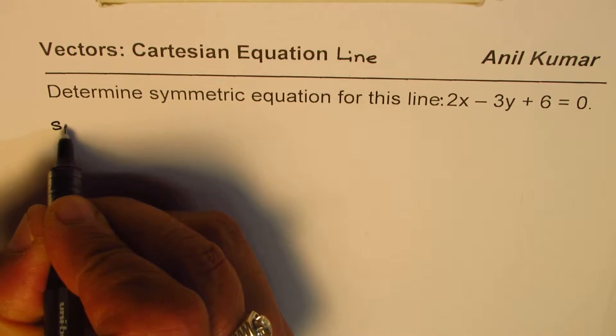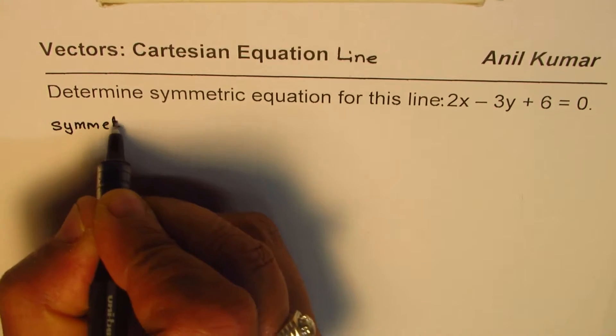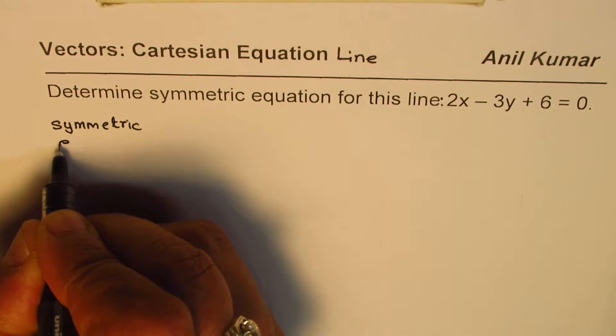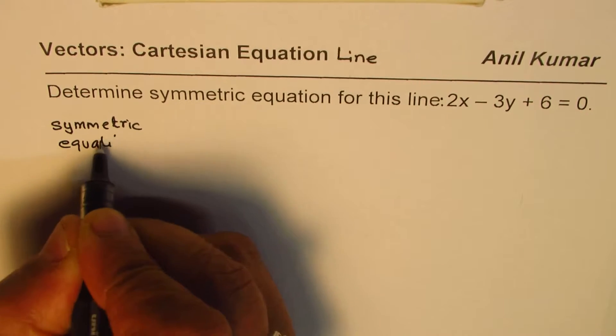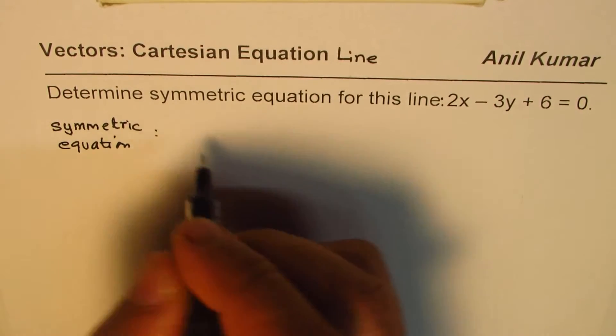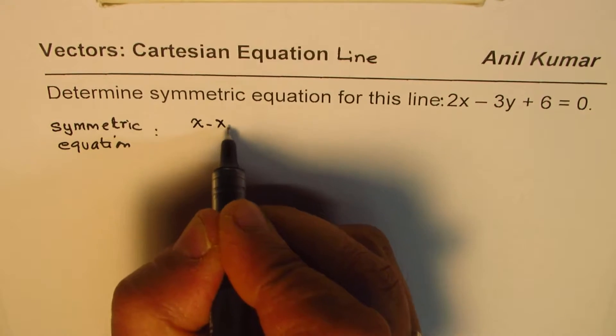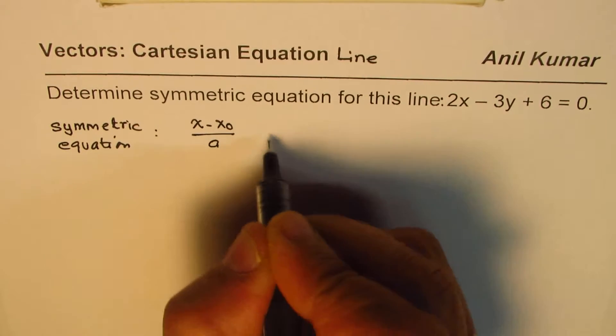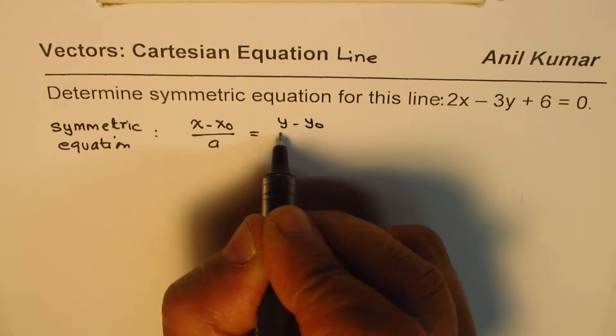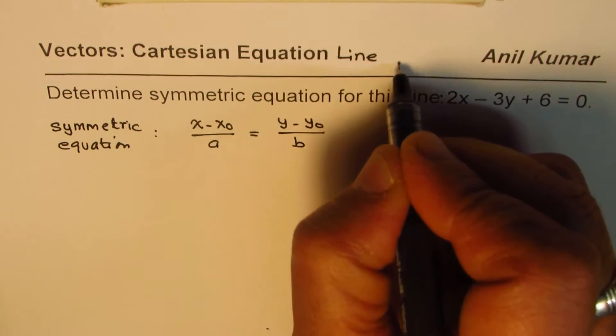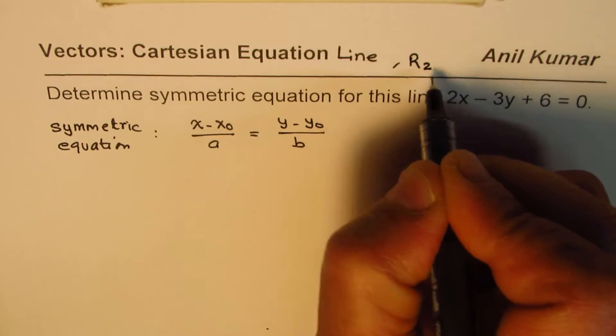Let me write down the symmetric equation first, and then we'll figure out how to convert. Symmetric equation is of the form x minus x0 over a equals to y minus y0 over b. We are doing in R2, two dimensions.